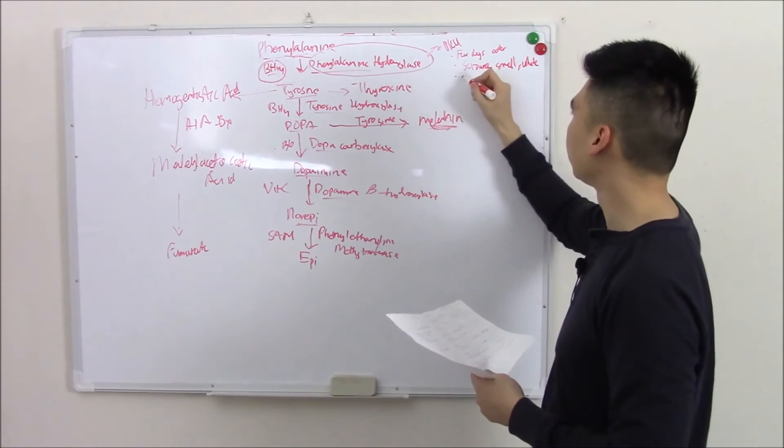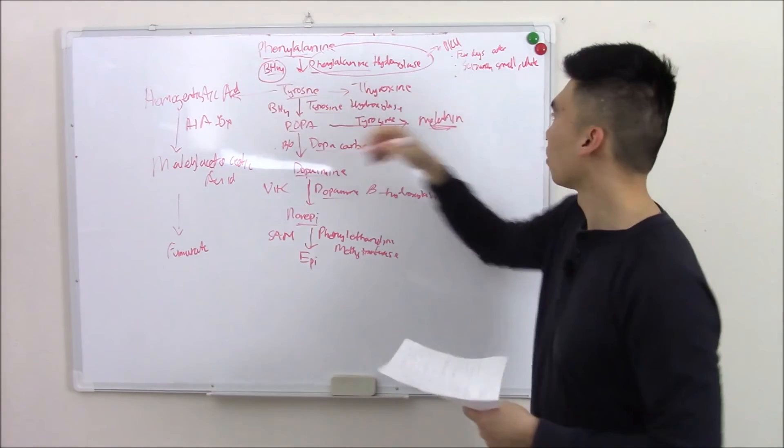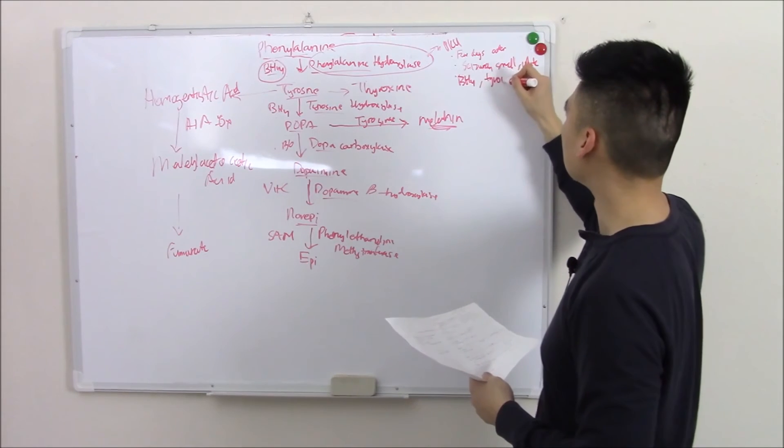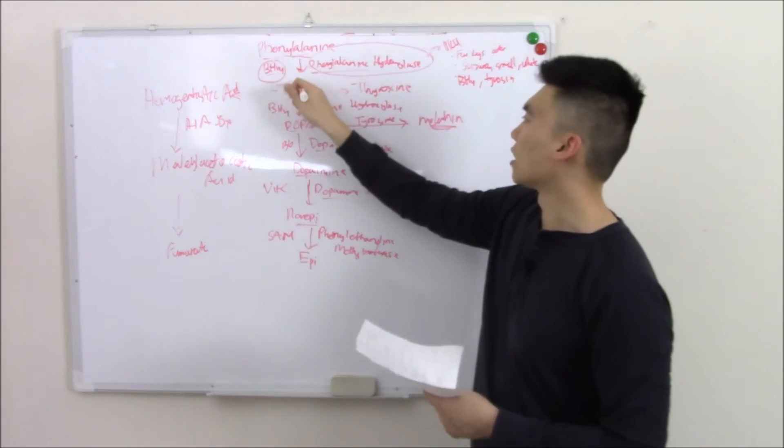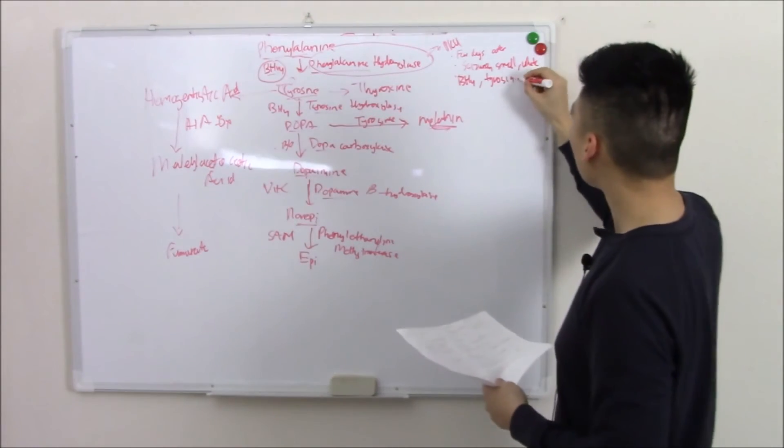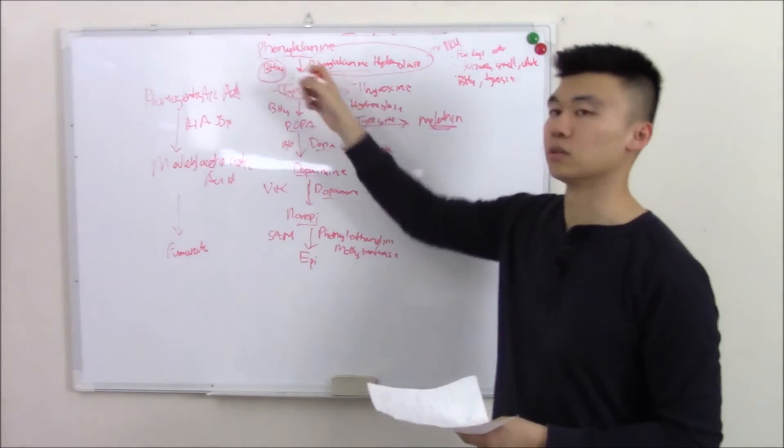If I ask how you treat it? Well, you would give BH4 and tyrosine. So you start here, bypass this whole roadblock. You also want to avoid artificial sweeteners because artificial sweeteners can have phenylalanine.